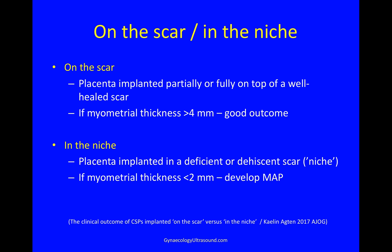Since the 2017 paper, we now differentiate whether the scar pregnancy is on the scar or in the niche. If the pregnancy is on the scar, the placenta is implanted partially or fully on top of a well-healed scar, and if the myometrial thickness in the region of the scar is around 4mm or more, that would predict a good outcome. Whereas if the scar pregnancy is embedded in the niche, the placenta is implanted into a deficient scar — and if the myometrial thickness is less than 2mm, this is predictive of morbidly adherent placenta developing if the pregnancy continues.